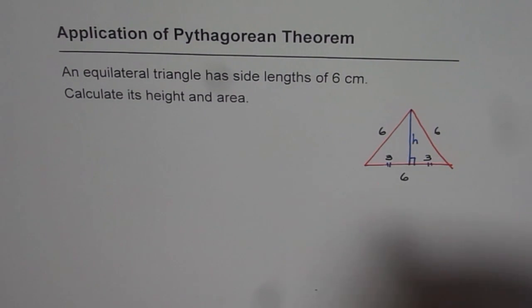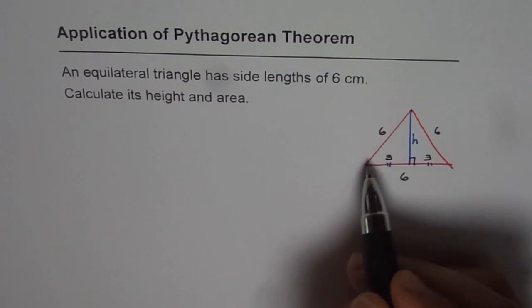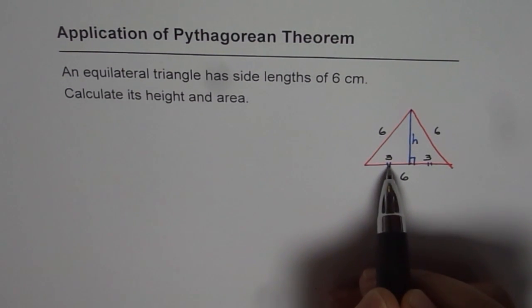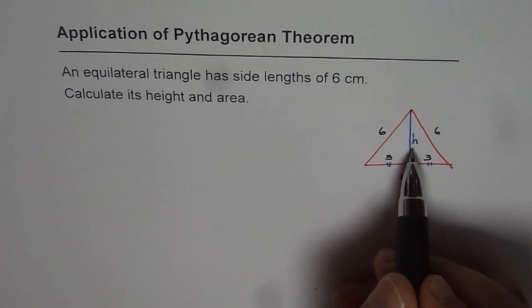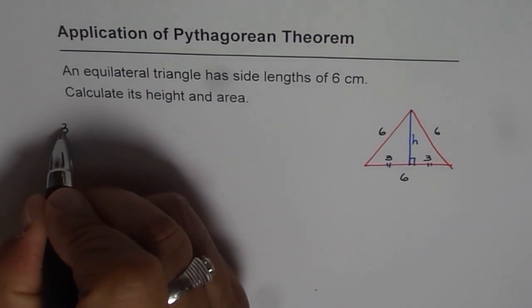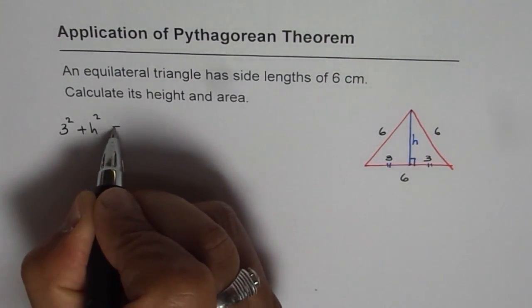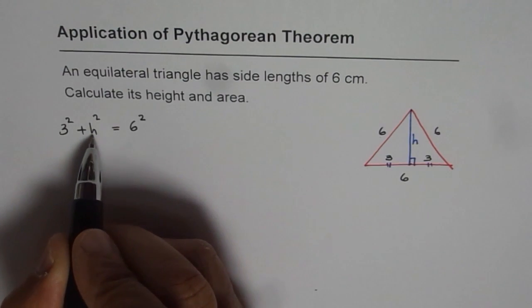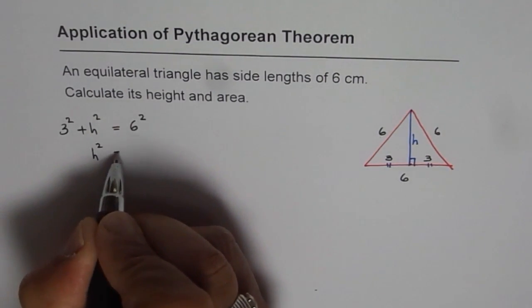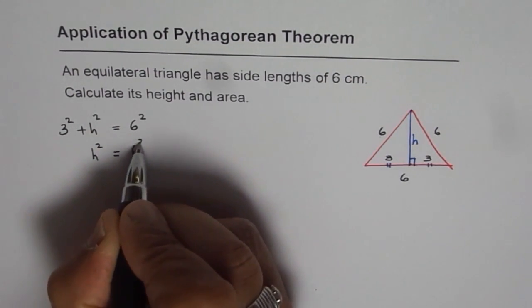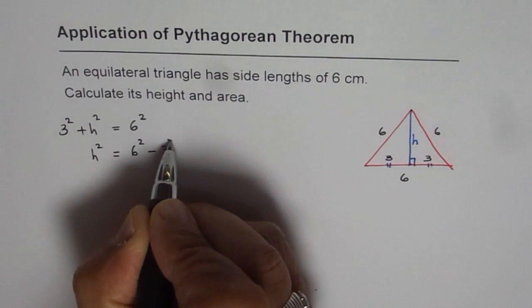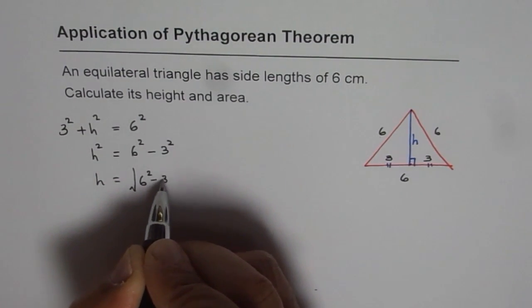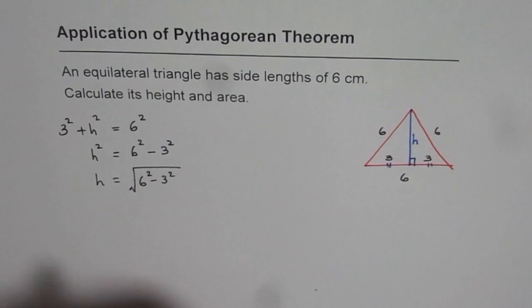Now, using Pythagorean theorem, we can find the height. Here we have a right triangle whose hypotenuse is 6, one of the sides is 3, and that should help us to find the height. So we know 3² + h² should be equal to 6². And now, from here, we can find h² equals to 6² minus 3². And height is equal to square root of 6² minus 3².